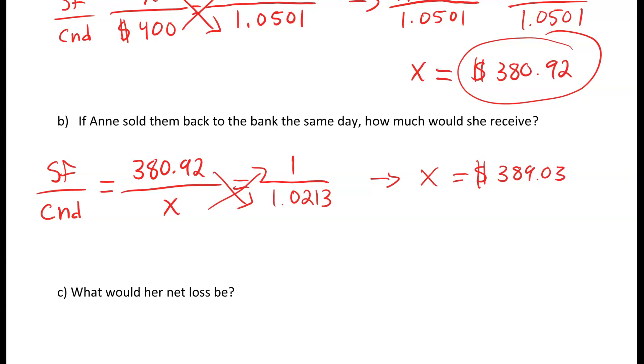So we originally had 400. We converted it to Swiss francs and converted it right back into Canadian. We had 400 and it is now only $389.03. So converting back and forth you're going to lose money along the way. It's important that you know exactly how much money you want to convert so that you're not losing money to the conversion.